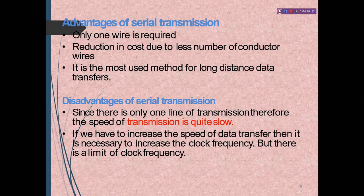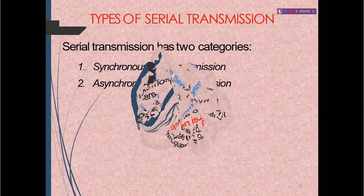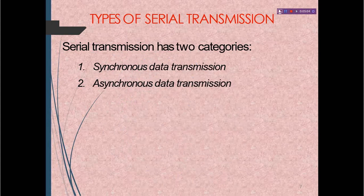To increase the speed of data transfer it is necessary to increase the clock frequency, but there is a limit to clock frequency. So the main disadvantage is that transmission is quite slow. Serial transmission has two categories: synchronous data transmission and asynchronous data transmission.